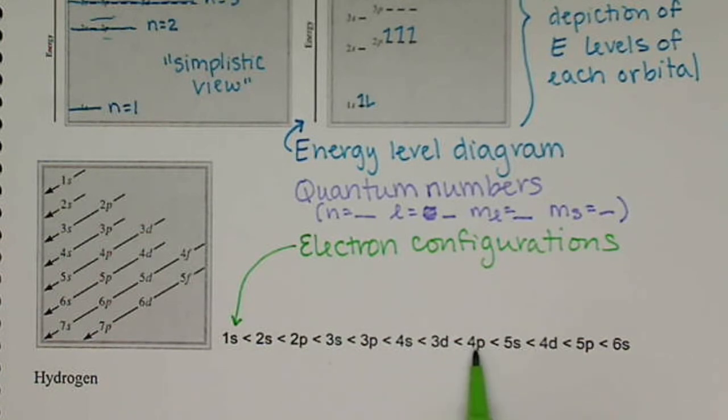So we go 4s, 3d, 4p. Then the 5s comes before the 4d, and we have the 5p and the 6s. It goes higher, but we won't need to know higher.